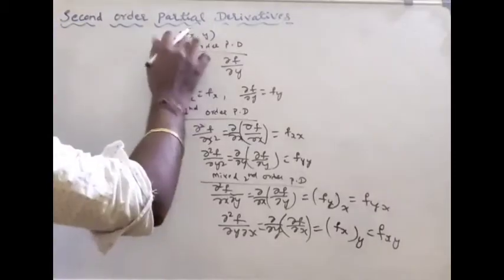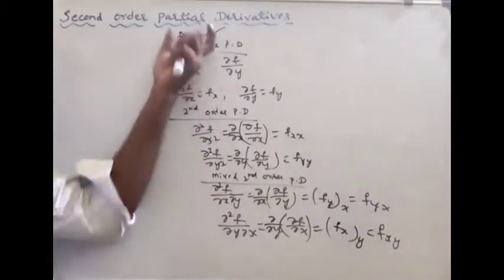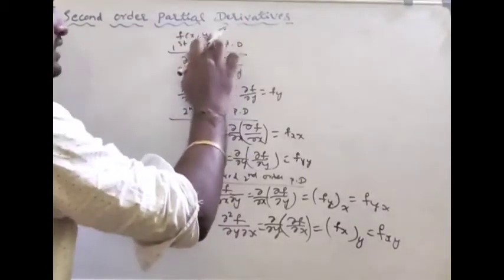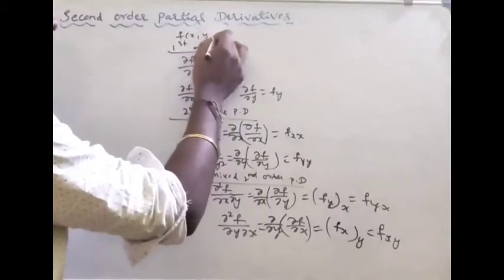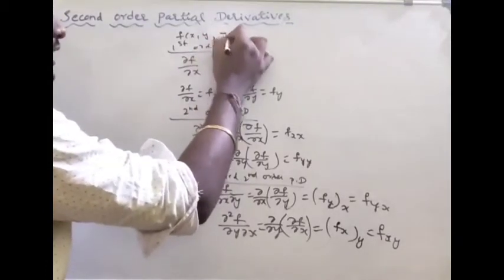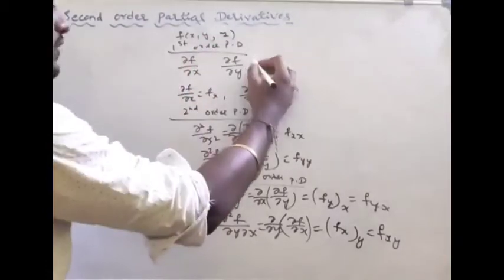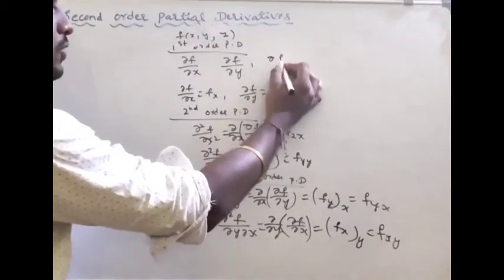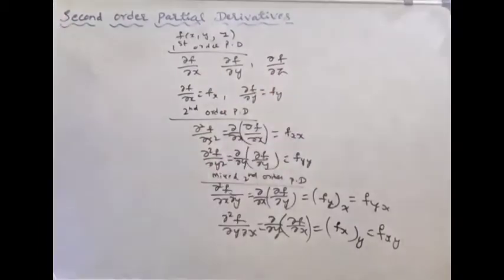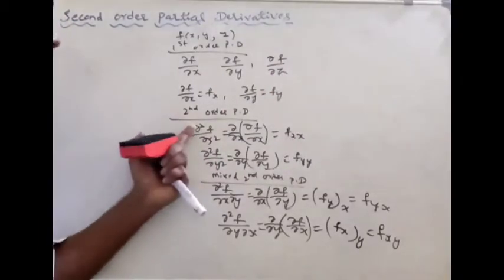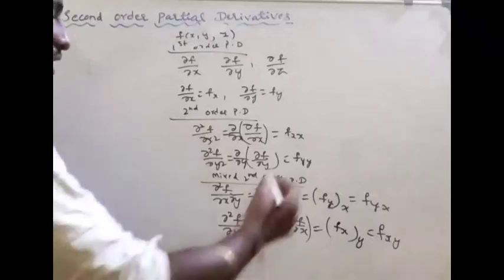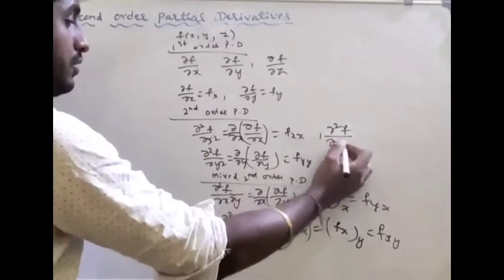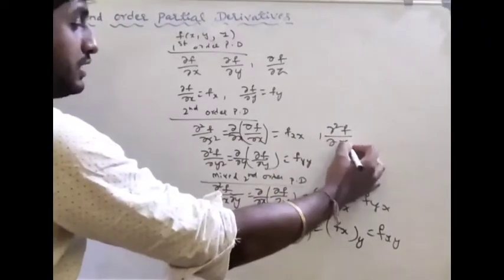Suppose there are two variables x and y. That would be two variables. There could also be three variables: x, y, z. Then the first-variable partial derivative translates to dou f by dou z, and the second-order partial derivative is dou square f by dou z square.